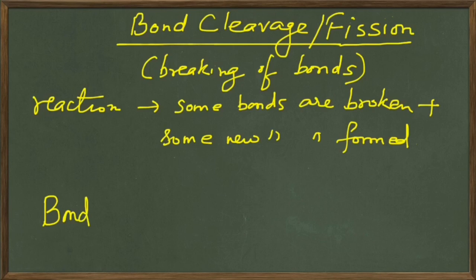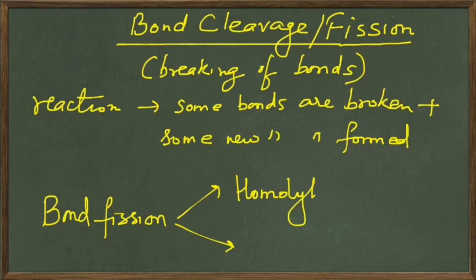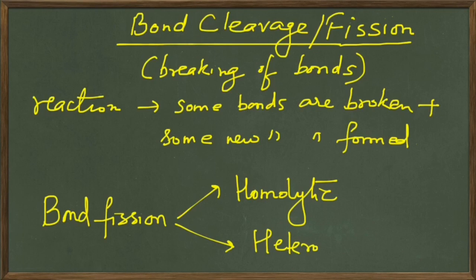There are two kinds of bond fissions or cleavage that occur in organic chemistry: homolytic cleavage and heterolytic cleavage. We will take a look at them one by one.